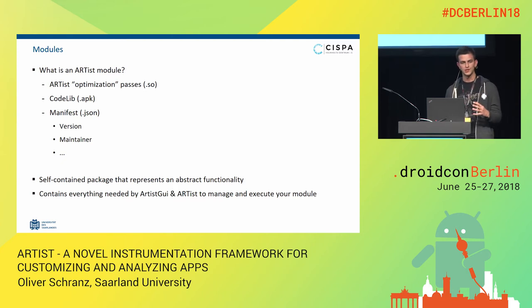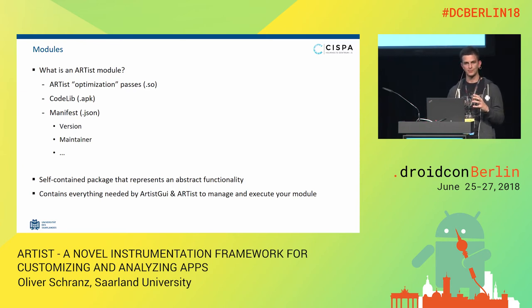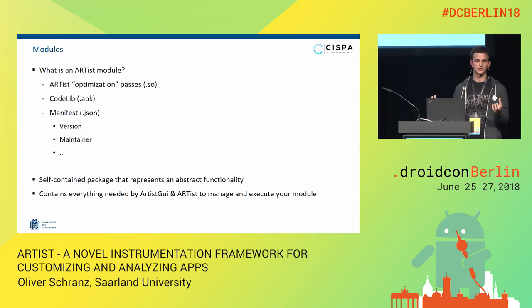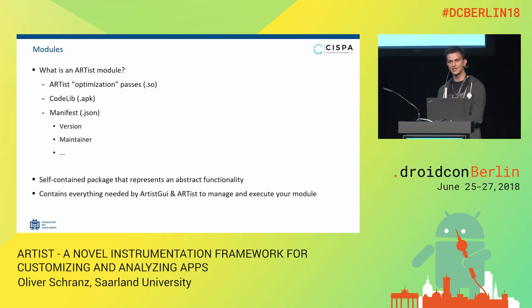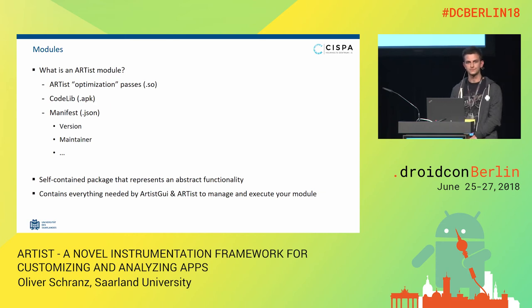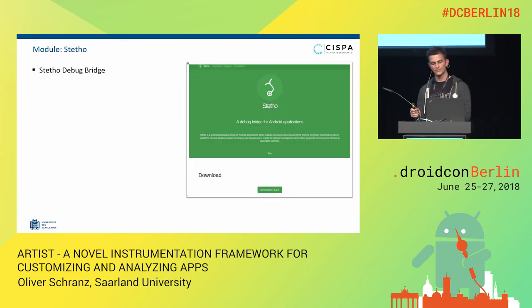When I refer to modules, I'm talking about well-structured, self-contained abstract functionality. For example, time tracking, ad-blocking — all of those would be modules. Think of them like keystone pieces that are put on other apps — modular functionality you can inject into arbitrary applications. From ARTist, you actually have two parts: an optimization pass — whatever the compiler believes is an optimization but is actually our glue code — and the code lib, which is just a regular Java or Kotlin library that you write containing all your business logic. The ARTist optimization pass stitches all the pieces together.